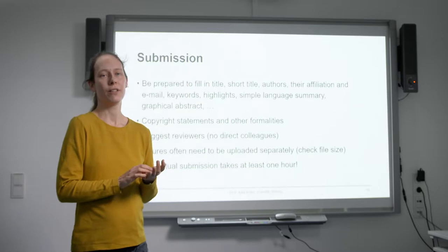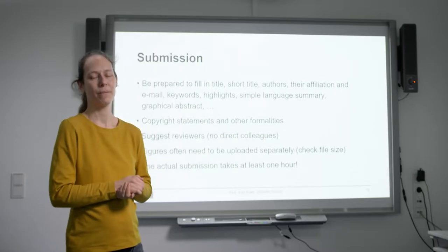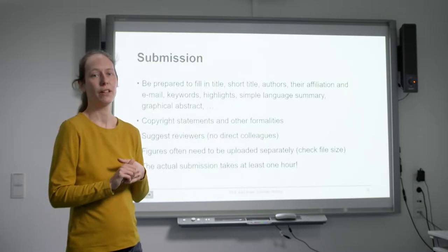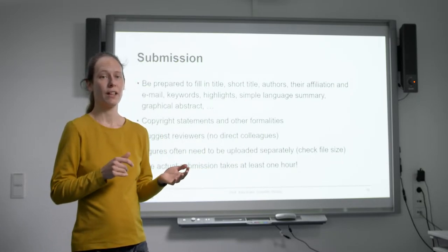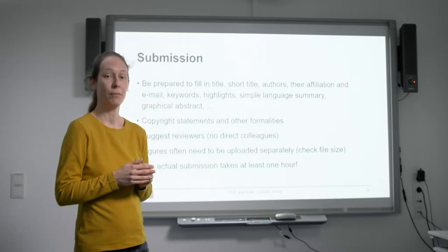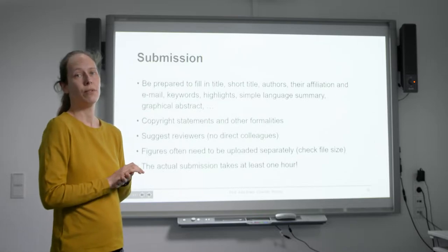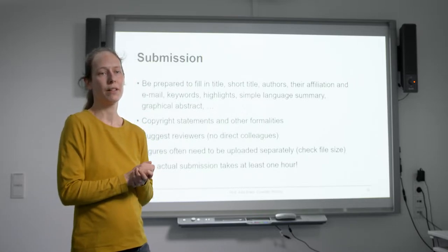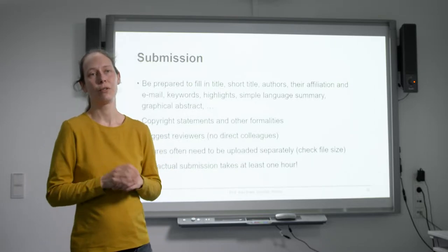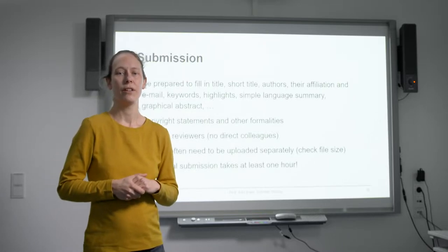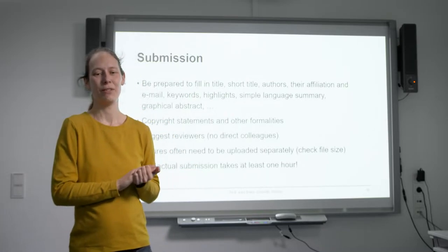Usually there are other formalities. For example, you always need a copyright statement that all the material you're publishing you're allowed to publish. That's something you need to clarify before, especially if you use other people's figures or parts of other people's published figures - you need to go to the journal and ask for consent to publish it again. Make sure you know for every foreign material if you're allowed to publish it. Then often you need to suggest reviewers - people in your field but not people you've recently worked with, like no former students of your supervisor and no other close colleagues.